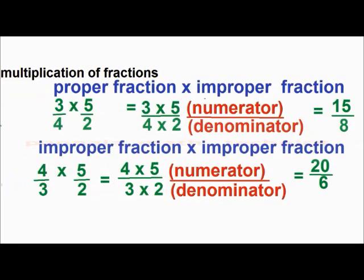Now, proper fraction into improper fraction: 3 by 4 into 5 by 2. Multiply numerators separately: 3 into 5, that is 15. And denominator separately: 4 into 2, that is 8. The result is 15 by 8.